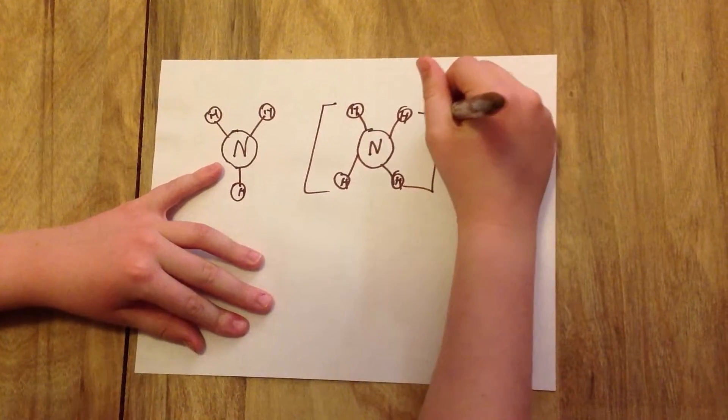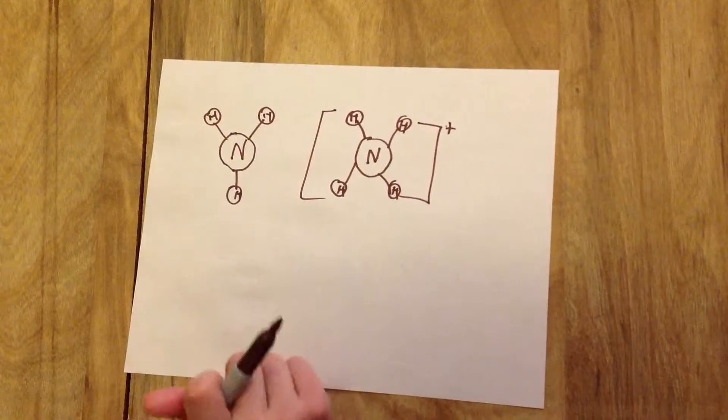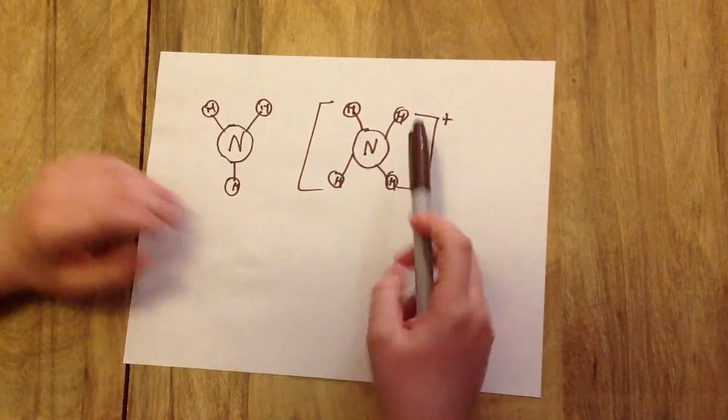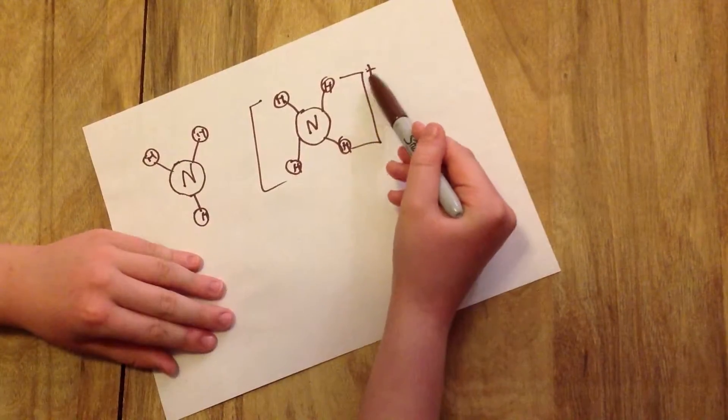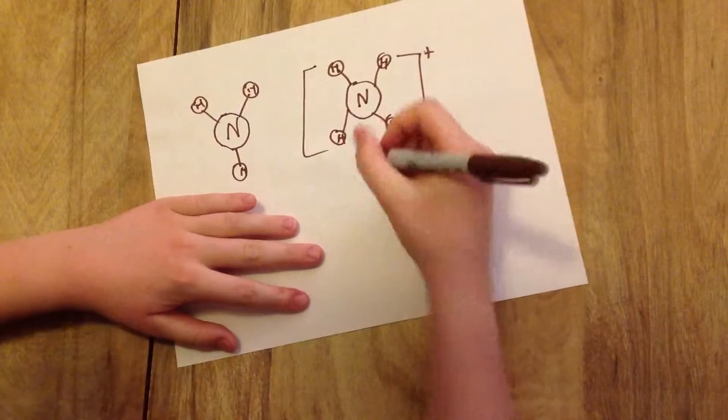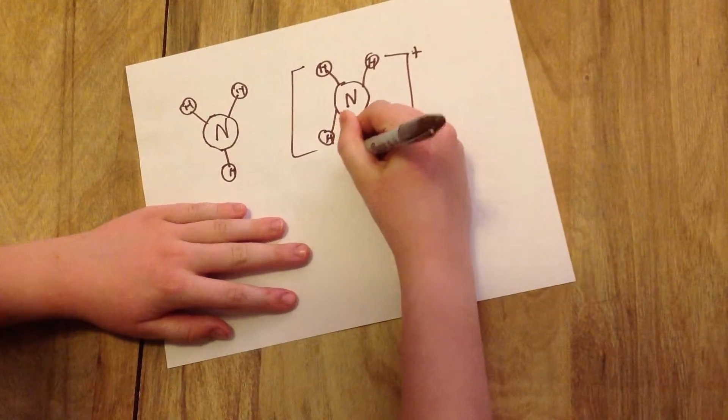Now you'll notice that I'm drawing brackets and a plus sign on the ammonium, but the ammonia is just a compound. Now this is because the ammonium is what is called a polyatomic ion.